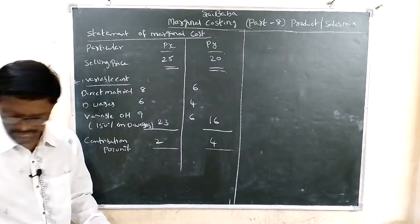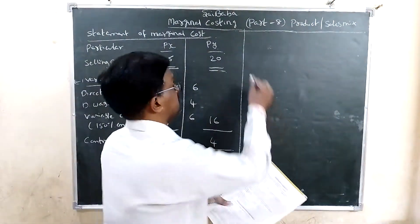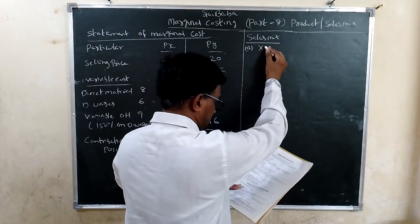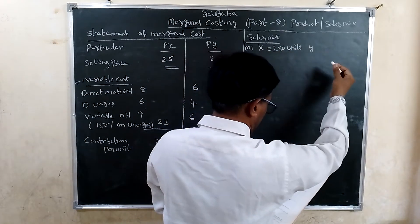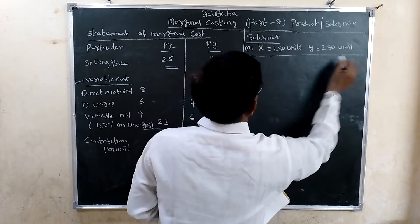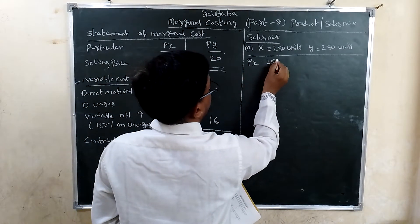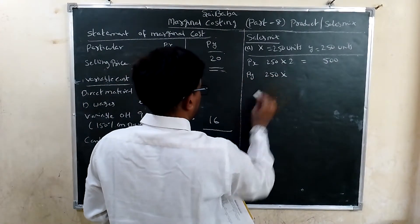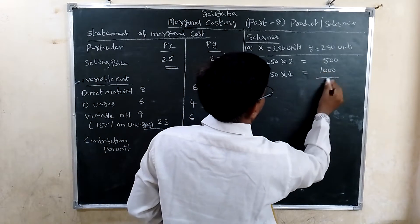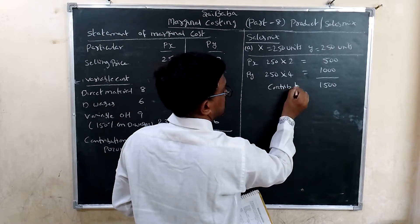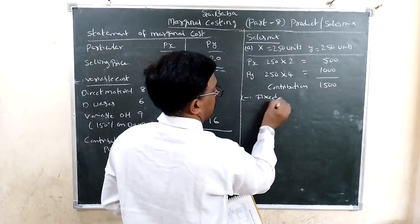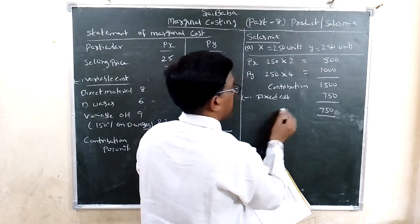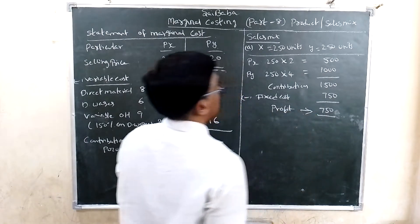Now let us see which sales mix is more profitable. Sales Mix A: product X = 250 units, product Y = 250 units. Contribution from X: 250 × 2 = 500 rupees. Contribution from Y: 250 × 4 = 1000 rupees. Total contribution = 1500 rupees. Less fixed cost = 750 rupees. Profit under Mix A = 750 rupees.